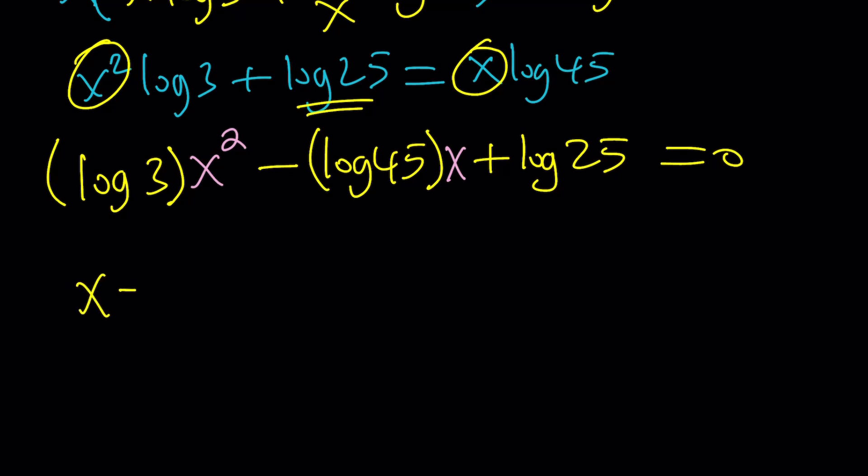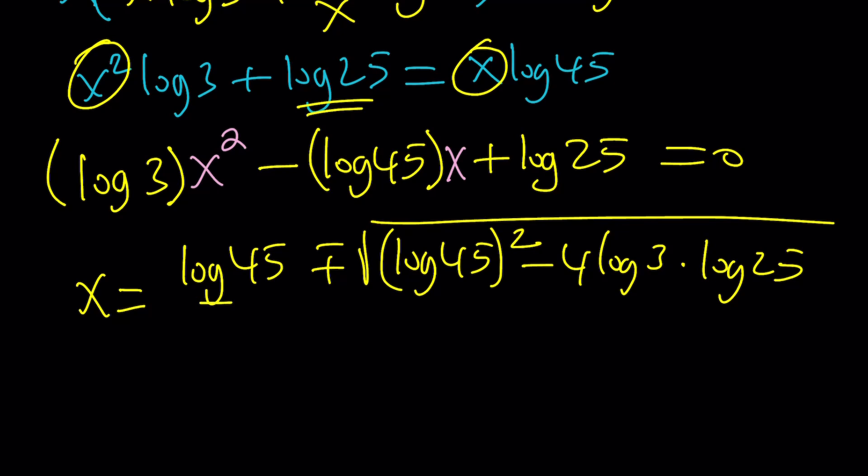The quadratic formula says x equals negative b, which is log 45, plus minus the square root of b squared, which is log 45 squared, minus 4AC, which is 4 log 3 times log 25. So we kind of have like a product of logs, and that's divided by 2 log 3.